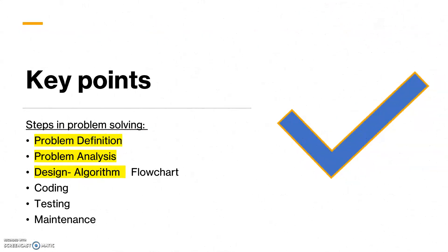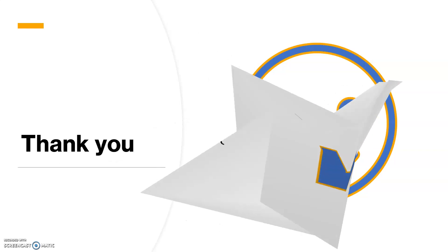These are the key points from this lecture. We learned about problem solving techniques, including the steps to follow: problem definition, problem analysis, and the design part where we covered algorithms in detail. In the next lecture, we will see the second step of designing — the flowchart — and then move on to coding, testing, and maintenance. Let us all meet in the next lecture. Until then, thank you all.